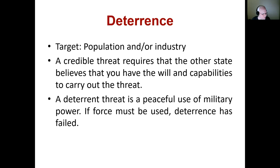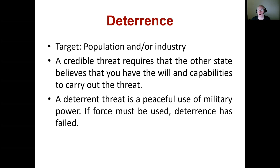A credible threat requires that the other state believes you have the will and capabilities to carry out the threat. For deterrent threats to function, the other side has to be aware you have the capabilities. If you threaten to destroy New York, LA, and Chicago if the U.S. does something you don't like, the U.S. has to believe you actually have those capabilities — or else the threat isn't credible. You also have to be believed to have the resolve to carry it out.